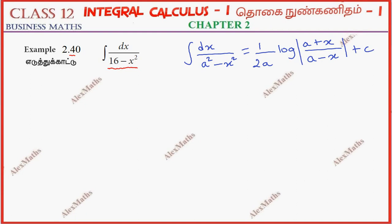In the question, in the general form, we will rearrange. So we have a square minus x square. dx by 16, we have 4 square equal to 4 square minus x square.